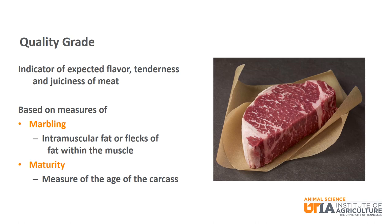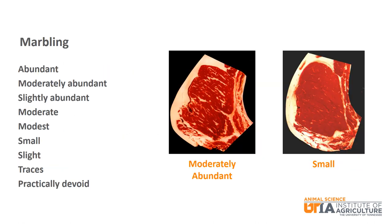Marbling, or intramuscular fat, is basically flecks of fat within the muscle. There are nine degrees of marbling for beef cattle: abundant, moderately abundant, slightly abundant, moderate, modest, small, slight, traces, and practically devoid.